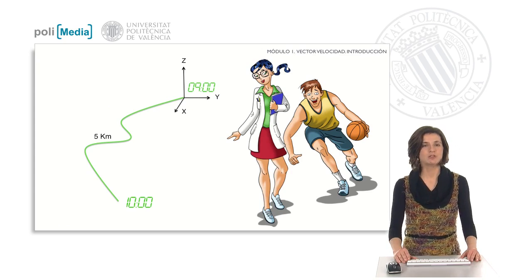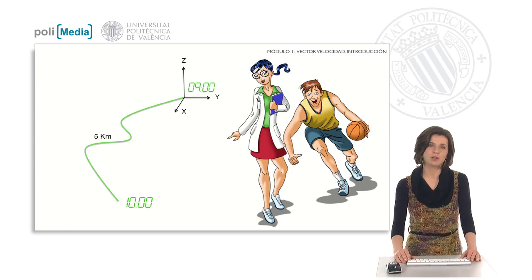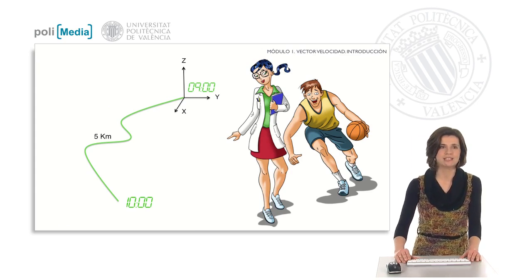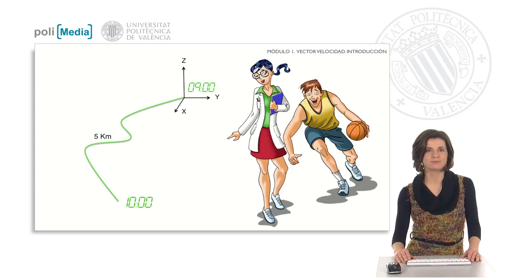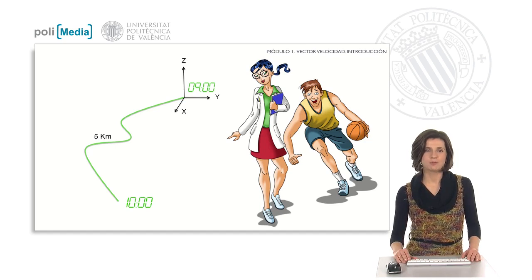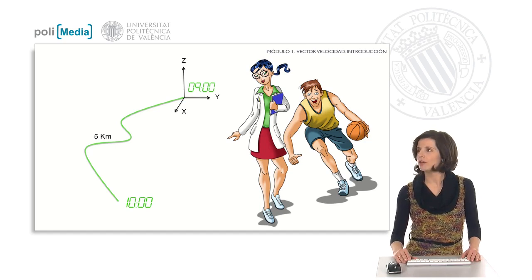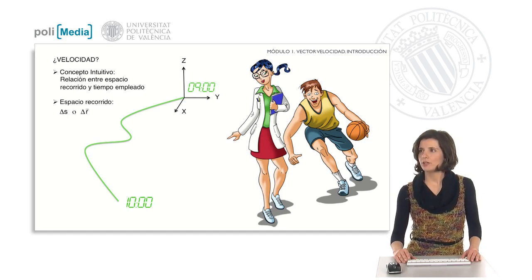This morning Amanda and Jay had a date to go to the basketball court together. In the end it took them longer than expected — it took them an hour and they covered 5 kilometers. But how fast did they go?